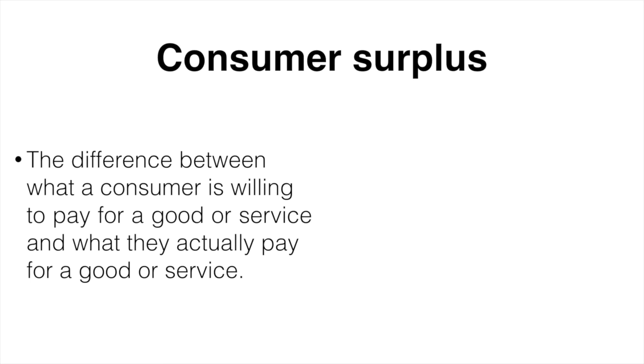In this table we will be looking at three fictional consumers, A, B and C, and the price they are willing to pay for a good, the price they actually paid, and their individual consumer surplus. Finally we will total the market consumer surplus which is the sum of all individual consumer surpluses.